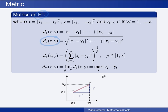The Euclidean metric can be generalized to the p-metric. Instead of squaring each of the differences, we raise each to the power p, sum them, and then take the p-th root of this sum. This can be done for any value of p from 1 up to infinity.